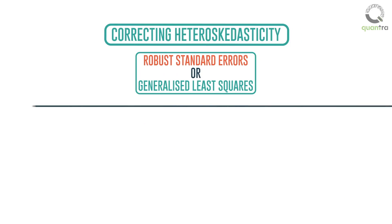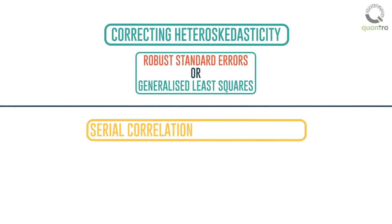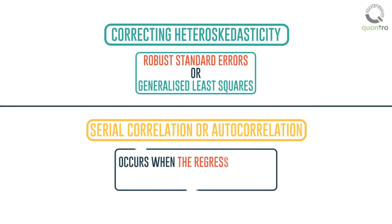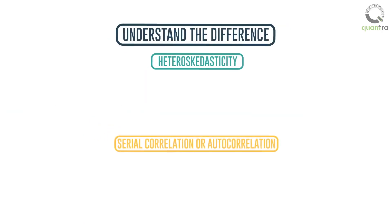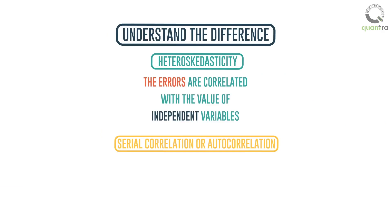The next term we need to understand is serial correlation. Serial correlation, or autocorrelation, occurs when the regression errors are correlated with one another. Understand the difference between conditional heteroscedasticity, where the errors are correlated with the value of independent variables, and autocorrelation, where the errors are correlated amongst themselves.